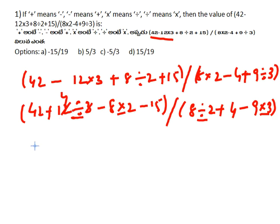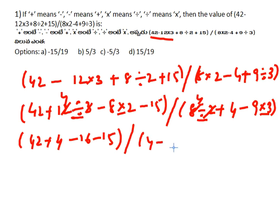42 plus 4 into 12, 4 into 8 is 4, 8 into 2 is 16 minus 15, 8 divided by 2 is 4 plus 4 minus 9 divided by 3 is 27.